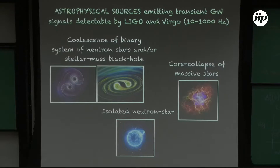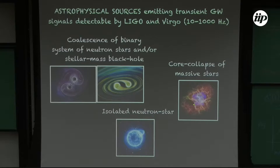Throughout this workshop we saw that the astrophysical sources emitting transient gravitational wave signals detectable by LIGO — in the band between 10 and 1,000 Hz — are essentially the coalescence of binary systems of neutron stars, black holes, or neutron star–black hole systems. The other source would be the core collapse of massive stars, or supernovae, although in their present incarnation the detectors probably won't have many chances of detecting a supernova, though it could happen.